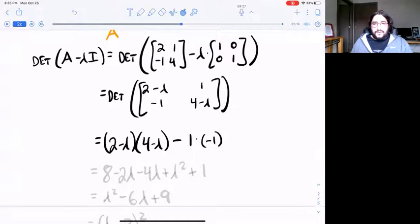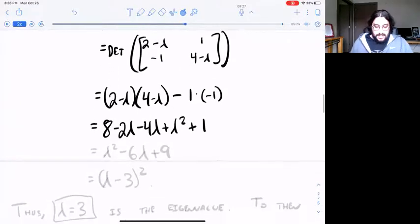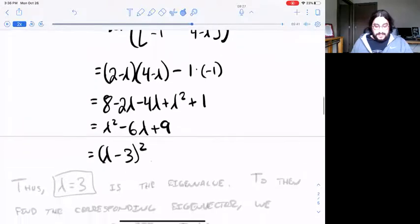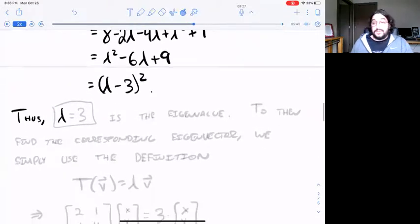Now just foil out that polynomial and expand using good old foil, and then factor that polynomial to find the roots. This one factors nicely: lambda minus three squared. So the only eigenvalue, the only root of the characteristic polynomial is lambda equals three. It's a double root in this case.